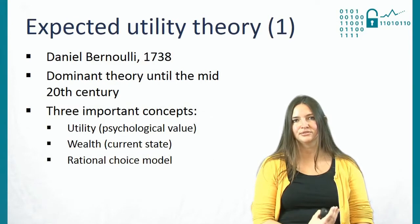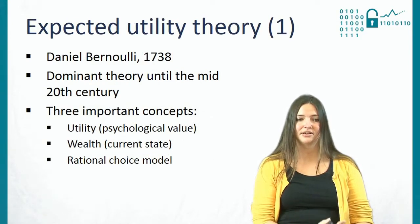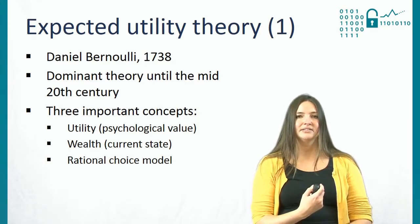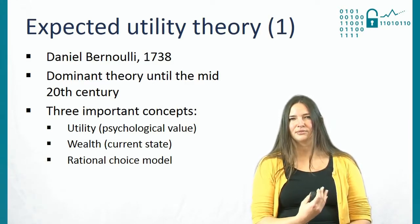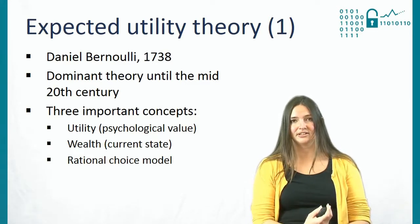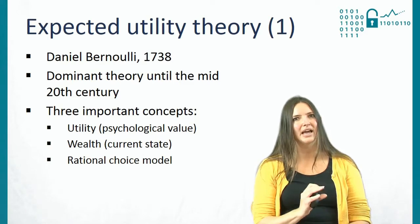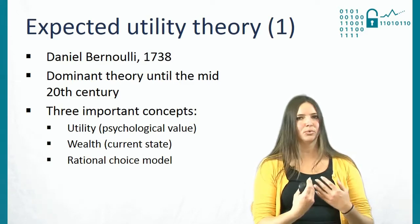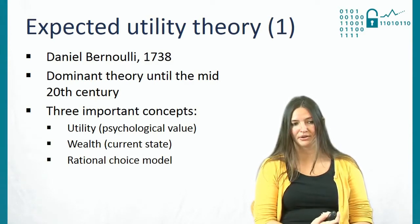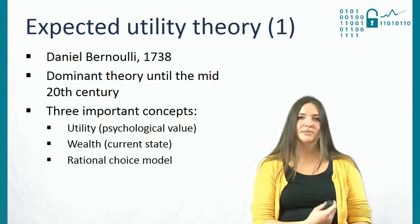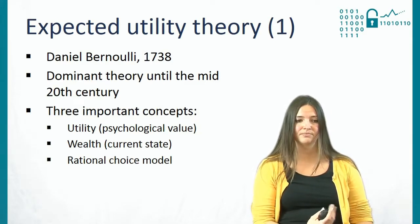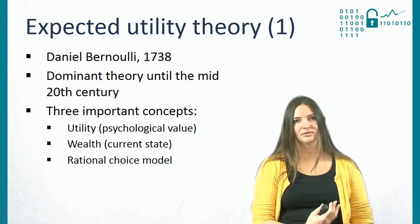The most dominant theory for about two centuries was the expected utility theory, created by Daniel Bernoulli in 1738. The expected utility theory has three important concepts. The first one is utility, which is not the absolute value of whatever you're grasping — for example money — but it's a psychological value. The second concept is wealth, which is the current state of what you have at the moment of making a decision. And the last one is that it's a rational choice model.